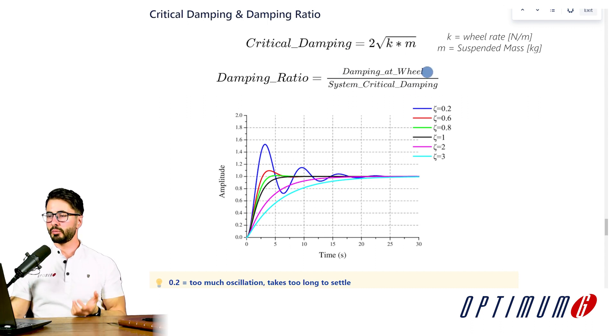Or we can be running a damping at the wheel that is lower than the critical damping, which we'll see as numbers such as 0.2, 0.6, 0.8. And we can see in blue, for example, when we have very little damping compared to the critical damping, the system oscillates a lot and it takes a lot of time to settle down.